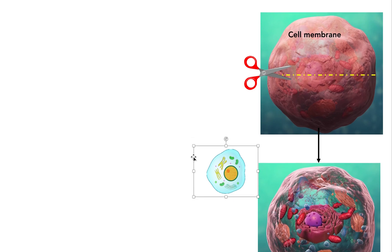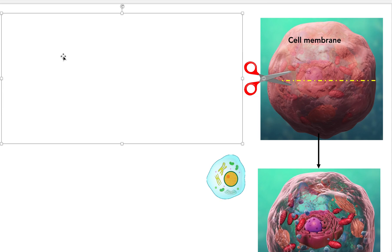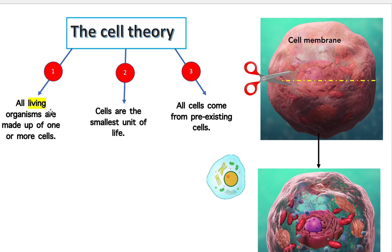Now let's go on to cell theory. There are three theories regarding cells that you need to know about — three things that are believed to be true. The first one is that all living organisms are made up of one or more cells. Cells make up all living things.